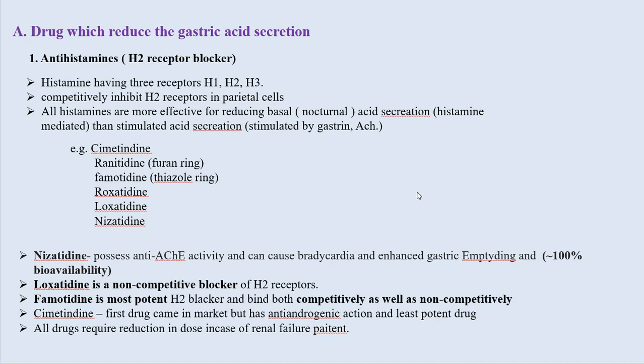Loxatidine is a non-competitive blocker of H2 receptor. Famotidine is the most potent H2 blocker and binds both competitively and non-competitively. Cimetidine was the first drug to come to market but has anti-androgenic action and is the least potent. All H2 blockers require dose reduction in cases of renal failure.